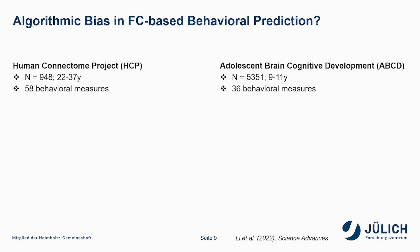To study this question, we used two large-scale public datasets from the US population, which have been intensively used to predict behavioral phenotypes from neuroimaging data. The first dataset, the Human Connectome Project young adults dataset, contains more than 900 subjects with 58 behavioral measures examined. The second dataset, the ABCD dataset, used more than 5,000 subjects with 36 behavioral measures.